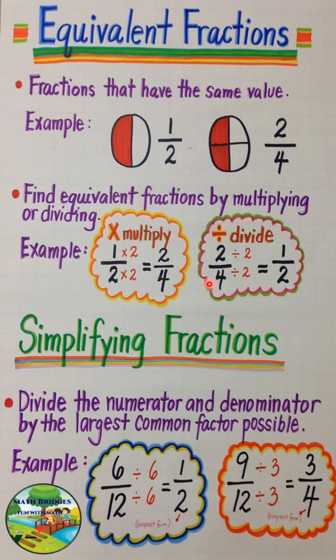First, let's see what we mean by equivalent fractions. Equivalent fractions are fractions which have the same value. For example, here half and 2 by 4, the value remains the same. So this kind of fractions are known as equivalent fractions.